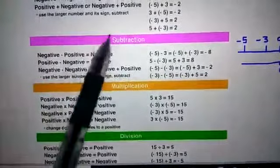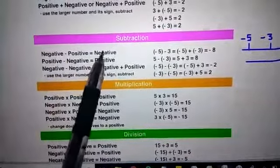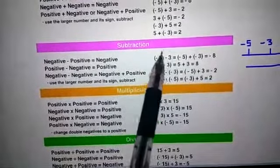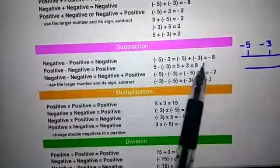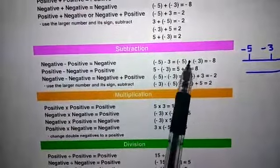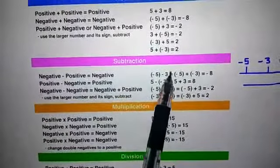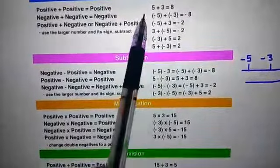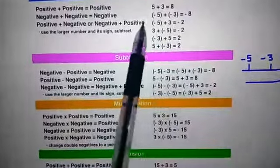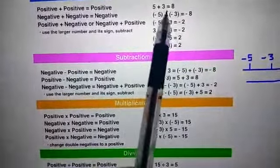The second operation is subtraction. If we subtract a positive integer from a negative integer, the result will always be negative. For example, if we subtract plus 3 from minus 5, we change the sign — we place minus 3 in brackets and change the sign to plus. Since we are now adding two negative integers, the result will always be negative. We add the two values and use the negative sign.